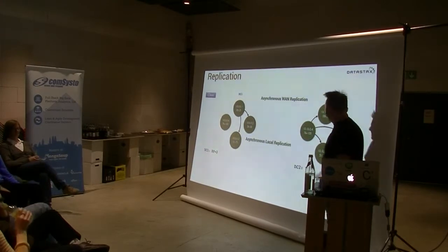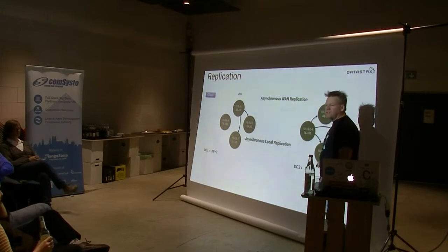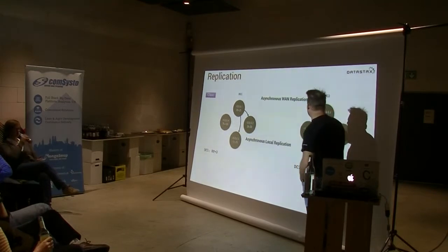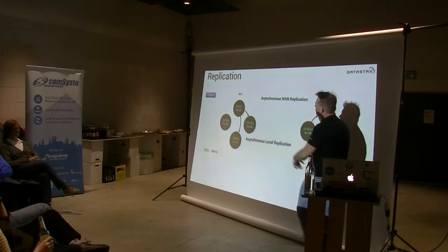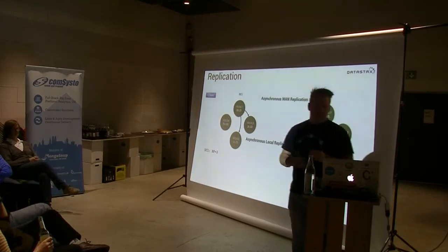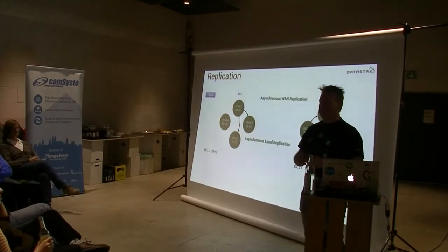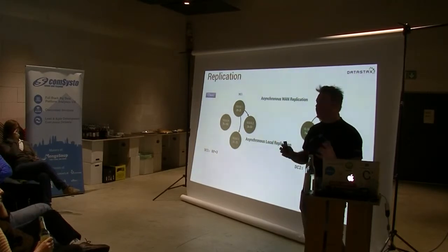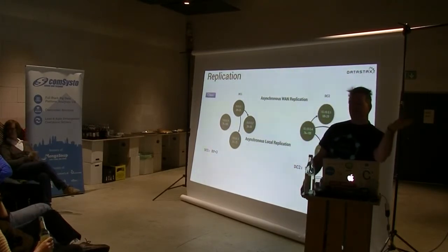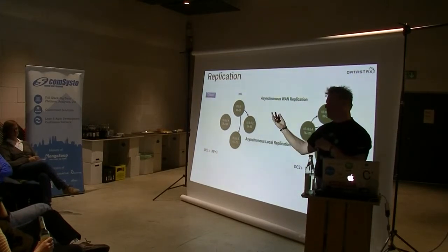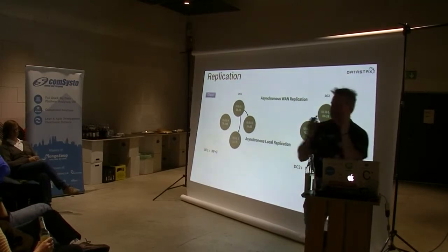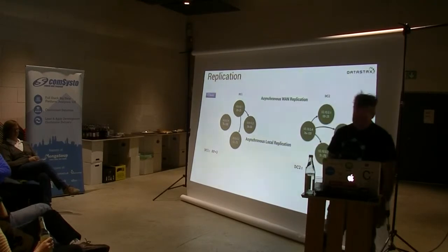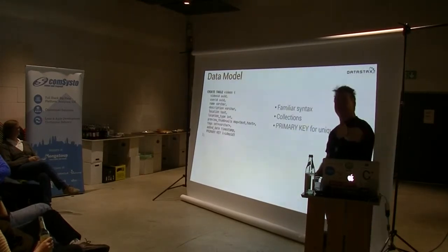With a replication factor of three, you get maximum protection — three copies in this data center, three copies in that data center. Tornado hits one? No problem. Netflix runs their company active-active on Cassandra: they have a data center on the western United States and one on the eastern United States, so if a meteor takes out one half of the country, you still get to watch movies.